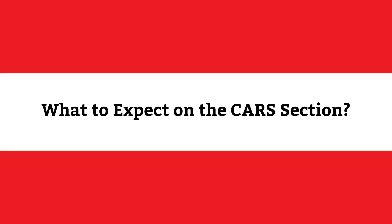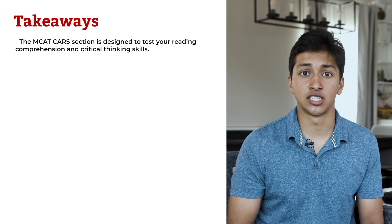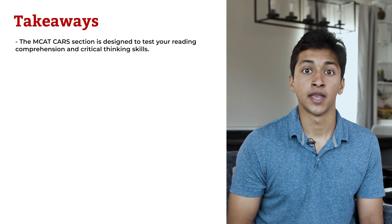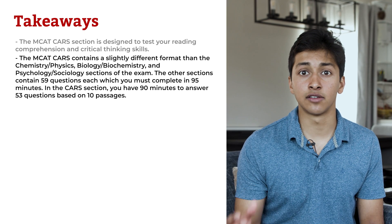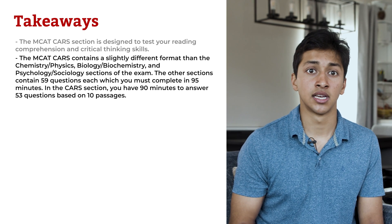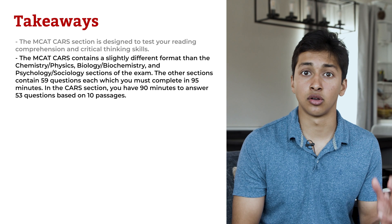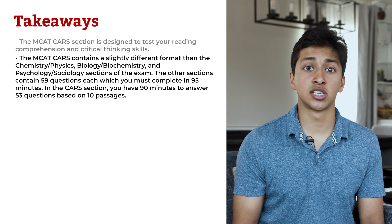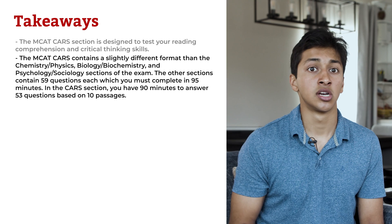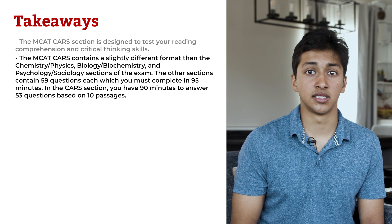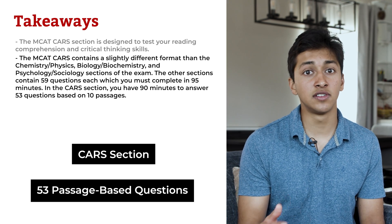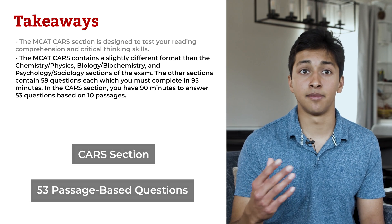What does the CARS section of the MCAT look like? The MCAT CARS section is designed to test your reading comprehension and critical thinking skills. The MCAT CARS contains a slightly different format than the Chemistry-Physics, Biology-Biochemistry, and Psychology-Sociology sections of the exam. The other sections contain 59 questions each, which you must complete in 95 minutes. On the CARS section, you have 90 minutes to answer 53 questions based on 10 passages.